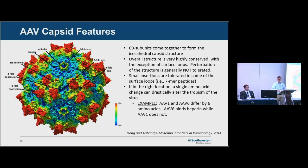The capsid is formed by 60 subunits that come together in an icosahedral structure with threefold, fivefold, and twofold axes of symmetry. The core structure is extremely well conserved — if you mutate highly conserved regions, AAV generally doesn't tolerate that well. Mutations in variable regions are typically tolerated. Attempts to insert large polypeptides into the AAV capsid are not well tolerated; most peptide incorporation approaches use short 7-mer peptides inserted into specific surface loops.